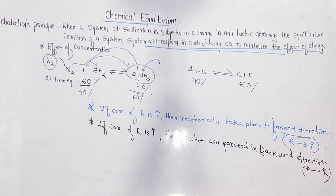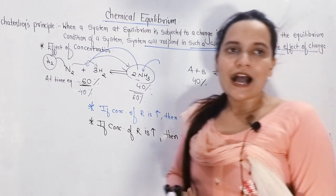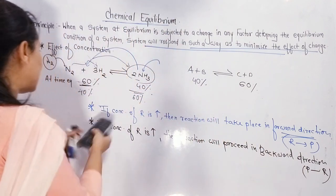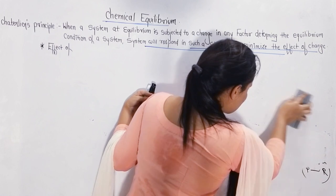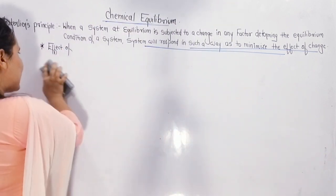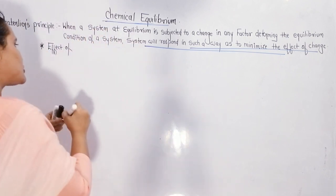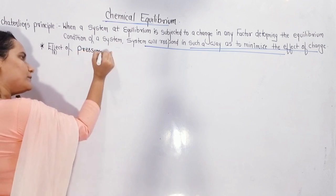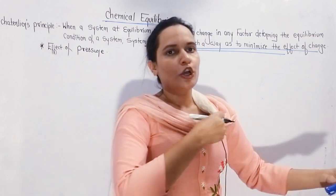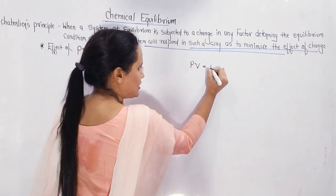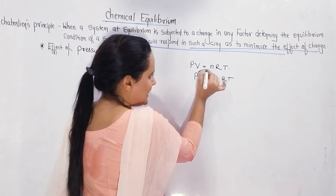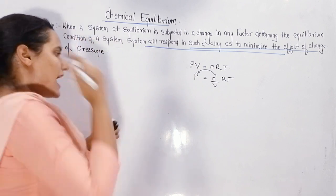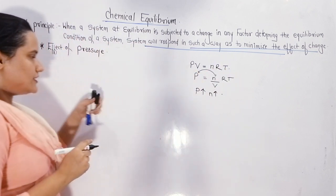Note down these two points: if reactant concentration is increased, forward direction; if product concentration is increased, backward direction. This is the effect of concentration. After concentration, we are going to talk about effect of pressure. If I increase pressure on a stable chemical equilibrium reaction, students, according to the ideal gas equation — PV = nRT — that means pressure is directly proportional to number of moles. If you increase pressure, number of moles will also increase.